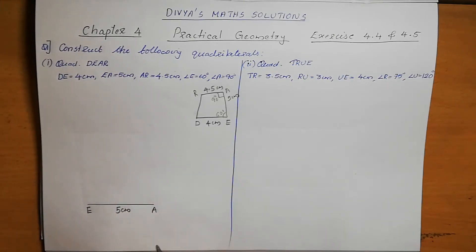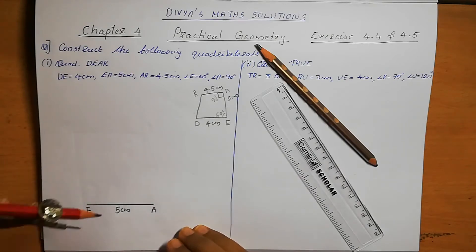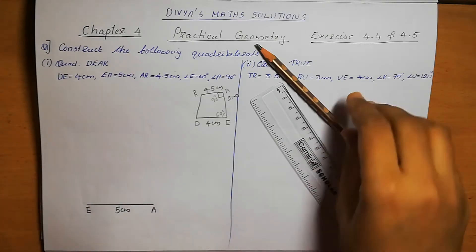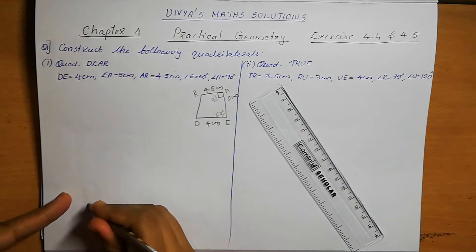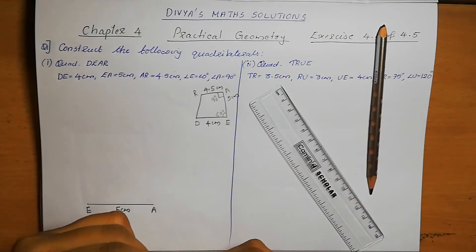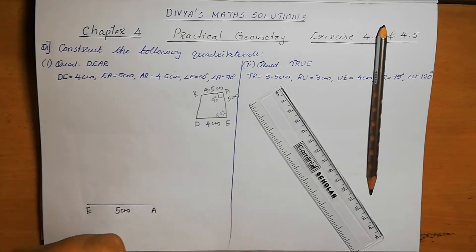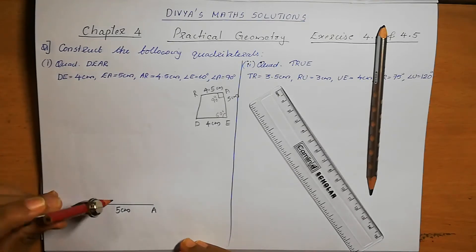Angle E is 60 degrees. We can either use the protractor and mark the angle directly, or use the compass to mark the angle. I am using the compass to mark the angle. Use a sharpened pencil while doing the drawing to mark the angle.